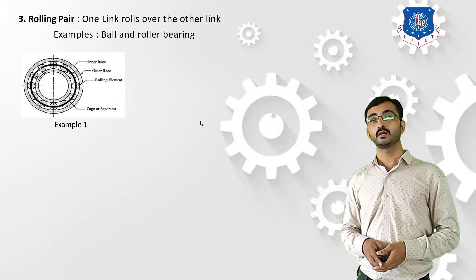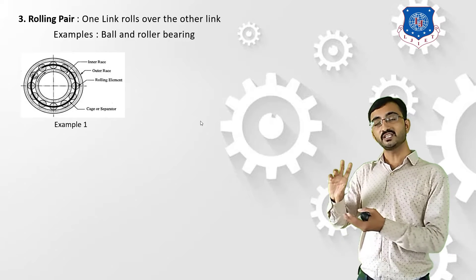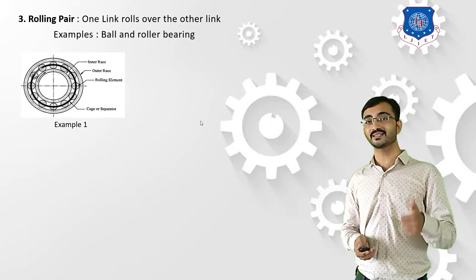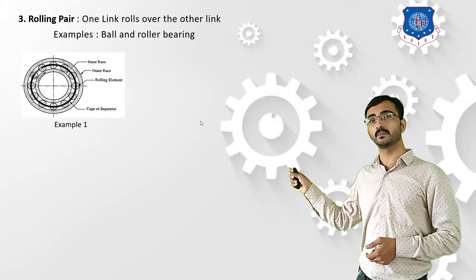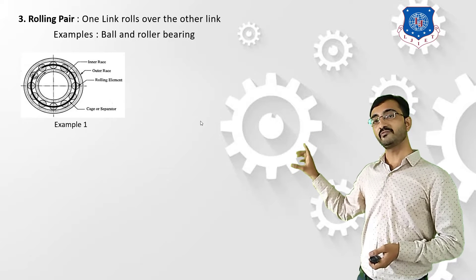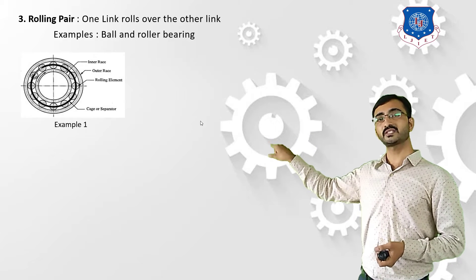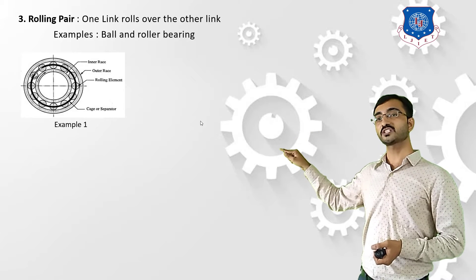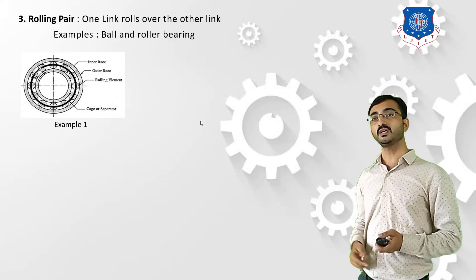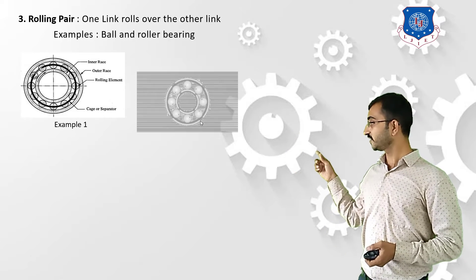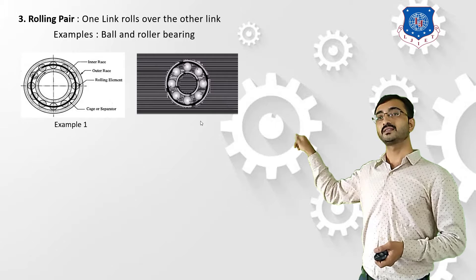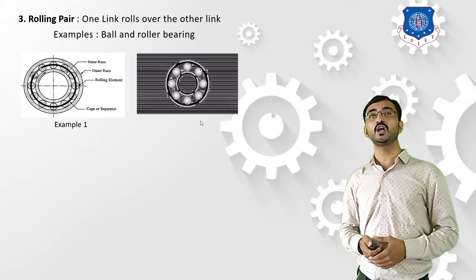The third type is a rolling pair. If the first component is rolling with respect to the other component, it is termed as a rolling pair. The example is a simple ball bearing. The outer casing is a stationary component, and the inner casing is another stationary body. The spheres between the outer and inner casing are totally rolling inside them. The rotation of the outer casing is produced due to the rolling of these balls — that is the basic example of a rolling pair.